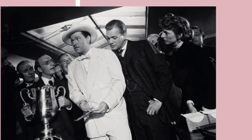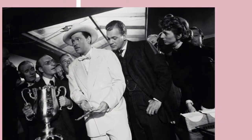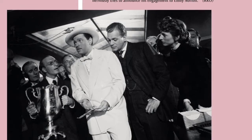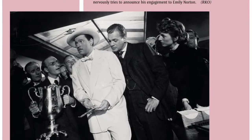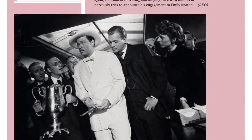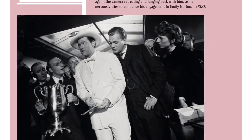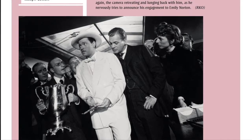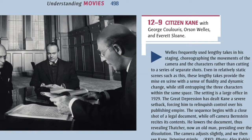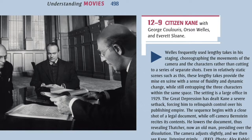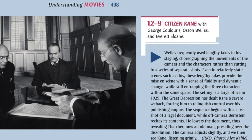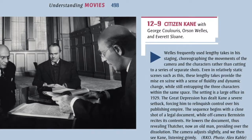12-8: Citizen Kane with Everett Sloan, Orson Welles, and Joseph Cotton. As a young man, Kane is a dynamo of energy, and his youthful high spirits are often conveyed kinetically, with brisk traveling shots that parallel the protagonist's movements. In this scene, he comically lurches forward and backward, then forward again, the camera retreating and lunging back with him, as he nervously tries to announce his engagement to Emily Norton. 12-9: Citizen Kane with George Coolerys, Orson Welles, and Everett Sloan. Welles frequently used lengthy takes in his staging, choreographing the movements of the camera and the characters rather than cutting to a series of separate shots.